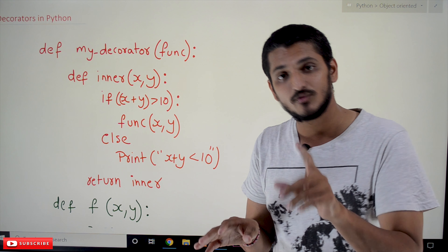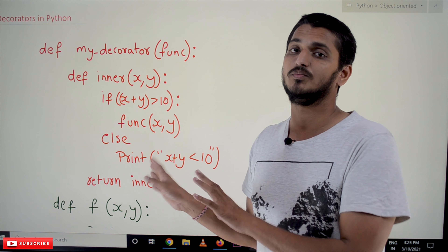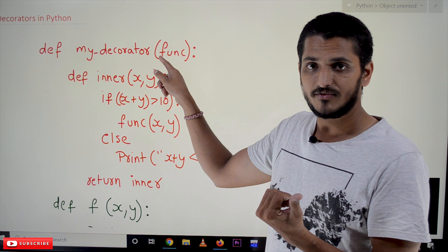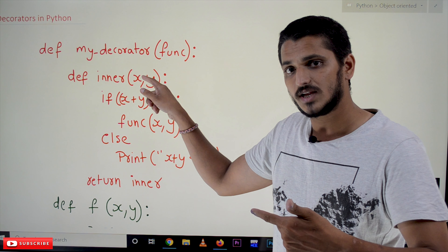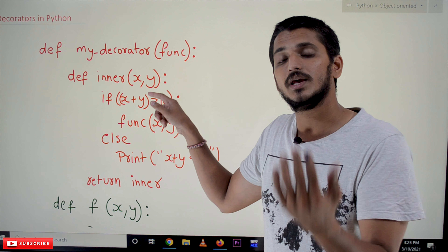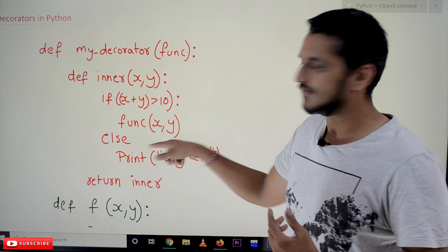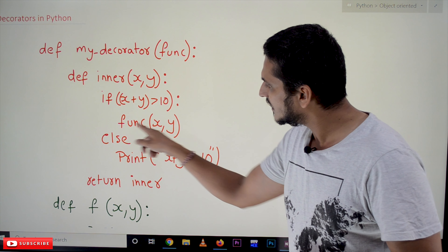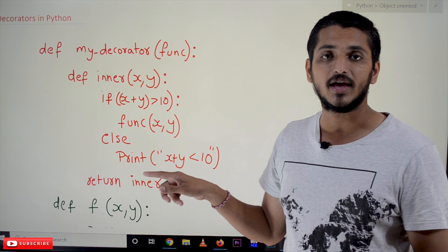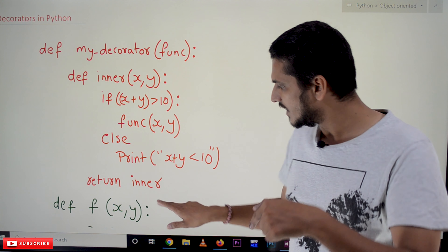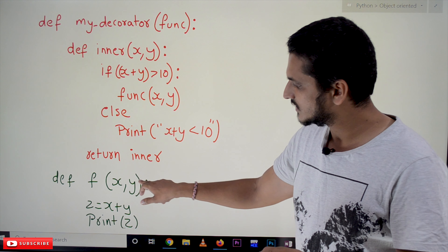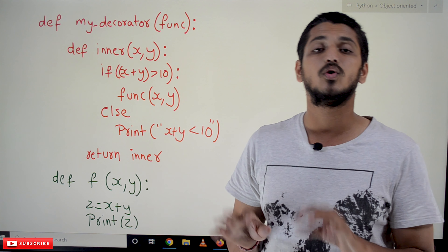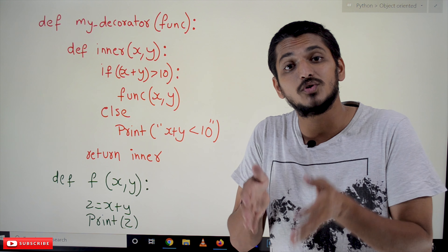Watch it again and again — this concept is very important to understand. `func` is having the reference of `f`. In the inner function, the logic we have written is: if x plus y is greater than 10, then call `func(x, y)`, which calls function `f`. It will add and display the output. Else, print that x plus y is less than 10 — don't call the function. We have imposed a condition.